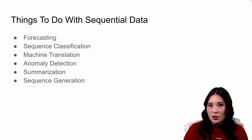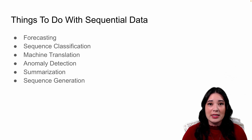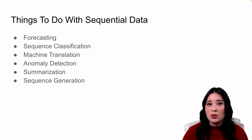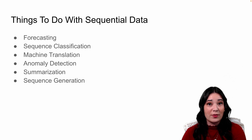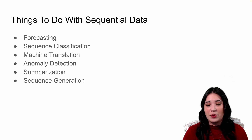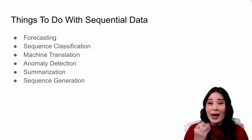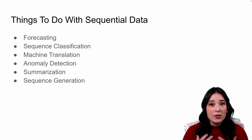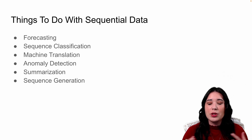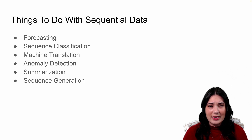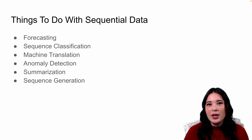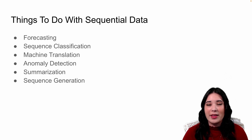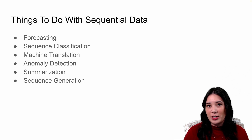Another thing we might want to do is machine translation — for example, translating one sequence, like a sentence, into another sequence in a different language. We also might want to do anomaly detection, looking at a sequence to see if anything happened out of the ordinary. We can also summarize data — for instance, taking a huge chunk of text and producing a couple of sentences summarizing it. And lastly, sequence generation: imagine feeding a model all of Jane Austen's work and asking it to generate a new chapter.